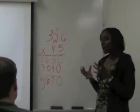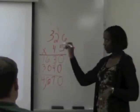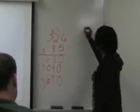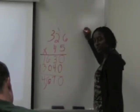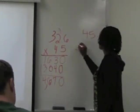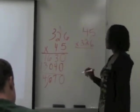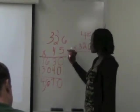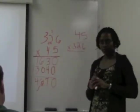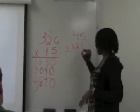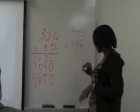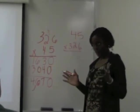The normal way to check traditionally is exactly what we did on the two-by-two: we flip the numbers. So we write 45 times 326. One important thing: the number of digits in the multiplier tells you how many partial products you will have. Since 326 has three digits, there will be three partial products. Does that make sense? Let's start multiplying.